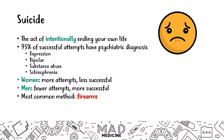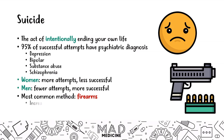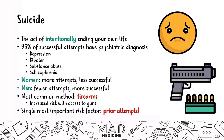Having access to a gun significantly increases suicide risk — that is the main thing to know for Step 1. If you want to reduce the likelihood of someone committing suicide and you know they have access to a gun, for example a suicidal child whose parents have a firearm, the first thing you want to do is make sure the gun is locked away where the child cannot access it under any circumstance. The single most important risk factor for suicide is prior attempts — if someone has attempted before, they are already at high risk of attempting again.